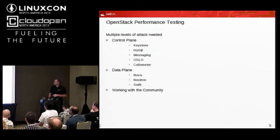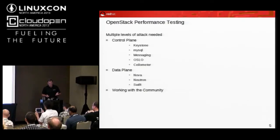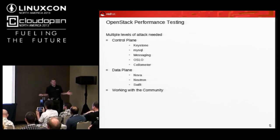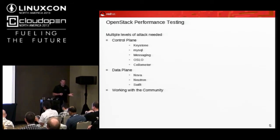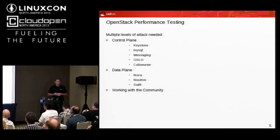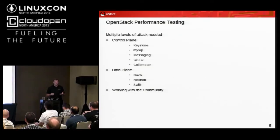When we get into test strategies, we focus on what we call the control plane right now, which is Keystone, MySQL, and the messaging. Oslo is an attempt to make a common set of libraries across OpenStack components so that if Keystone and Nova are both calling something, there's one set of code to do that. If we can focus energy there and fix any bottlenecks, you get a win across multiple components. There are also new things like Ceilometer coming in — that's the monitoring and metering component, which will be important for chargebacks, SLAs, and things of that nature.